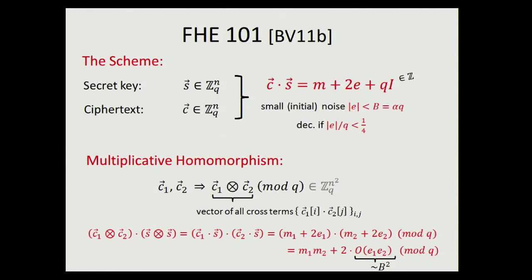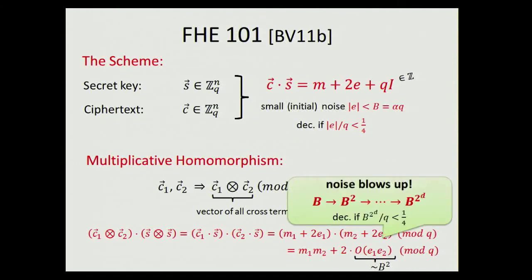This noise growth can be okay initially when B is small, but if we do D multiplications, each time the noise squares, so after D steps the noise is something like B^(2^D), and it won't be long before we lose decryptability.